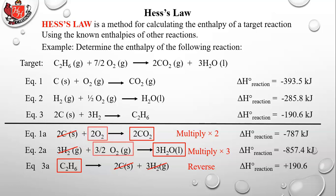For the oxygen: we have 2 O2 from equation 1a and 3/2 O2 from equation 2a, both on the left. Converting: 2 = 4/2, so 4/2 + 3/2 = 7/2 O2. Checking against the target — 1 C2H6, 7/2 O2, 2CO2, 3H2O — everything matches, confirming we correctly derived the target equation from the three reactions.